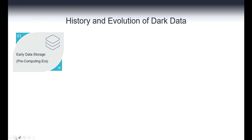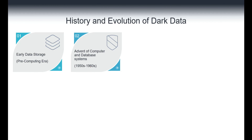When it comes to the history and evolution of dark data, it actually started in the pre-computing era where data was primarily stored in physical forms such as papers, records, ledgers, or documents. The challenge of organizing, accessing, and analyzing vast amounts of data existed even in those early stages. Dark data is not just about digital data — data piled up in physical files and documents can also be considered dark data, so this problem existed even before the advent of computers.